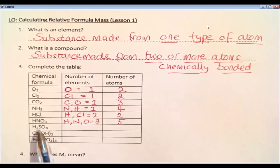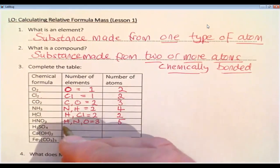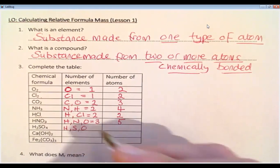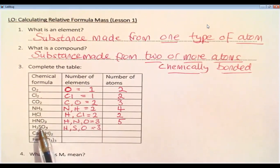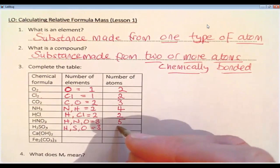And then we have H2SO4, hydrogen sulfate or sulfuric acid. And we have H, we've got S, and we've got O. So that's three elements. And then counting up the atoms, see if you can do it faster than I can. We've got four oxygens, one sulfur, so that's five, and two hydrogens. That makes seven.